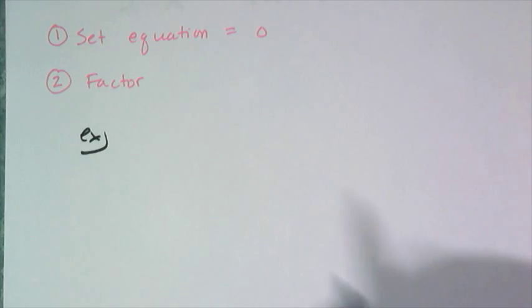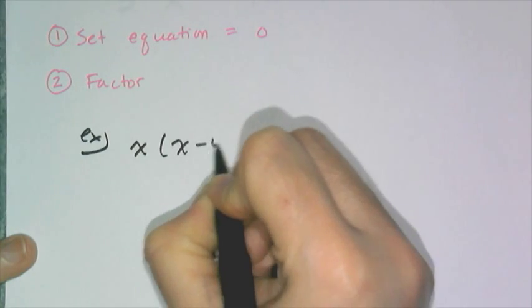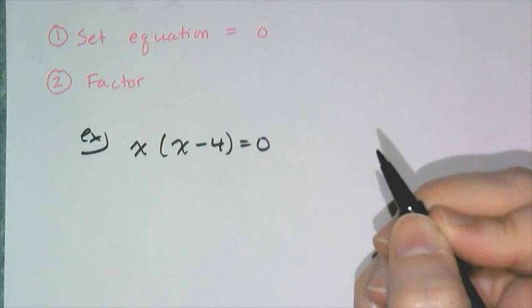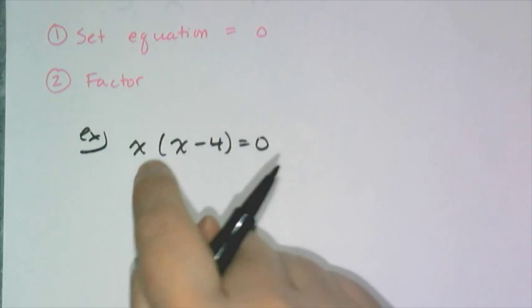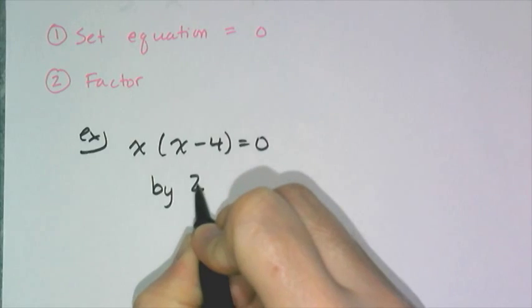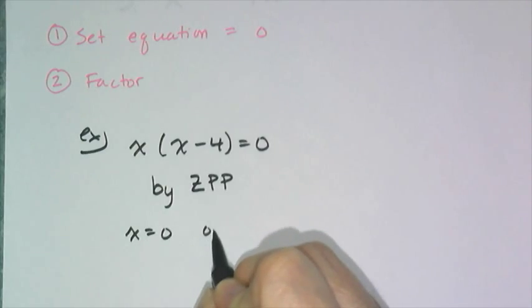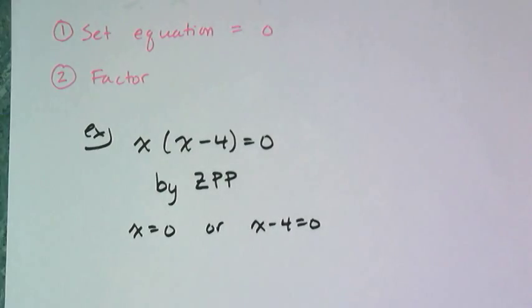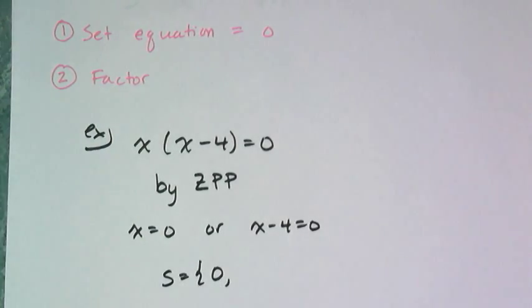Say I have a polynomial and I factored it and I get that it factored into x times x minus four equals zero. Well what the zero product property tells me is that one of these factors has to equal zero. So by the zero product property, either x equals zero or x minus four equals zero.